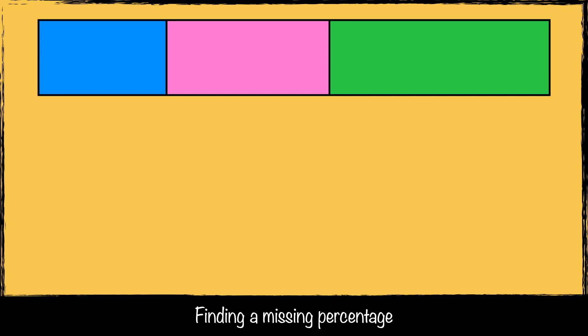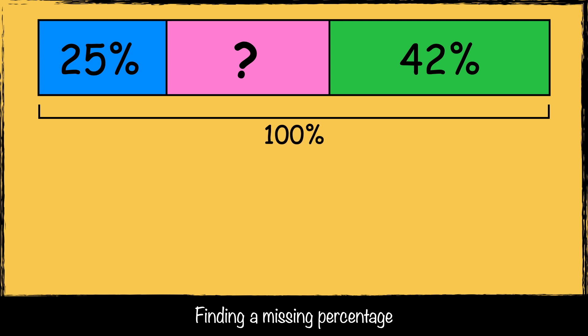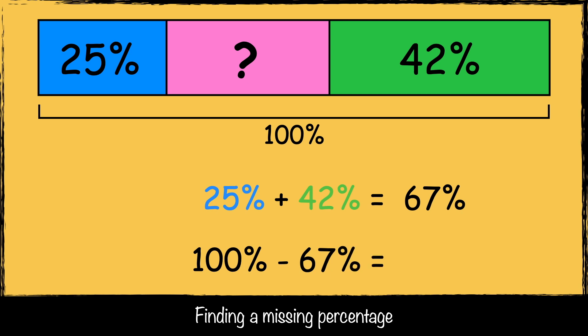Here's the next challenge. In this challenge, the shape is split into three parts. 25% of the shape is blue and 42% of the shape is green, but what percentage of the shape is pink? We start by noting that the whole shape is 100%. We can add together the percentages we already know: 25 add 42 is 67.